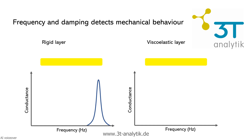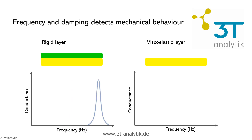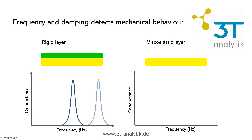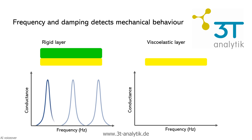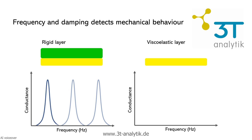Now we add a rigid layer to the sensor. As the layer thickens, the resonance frequency drops — the vibration slows down. Because the rigid layer doesn't absorb much energy, the peak shape stays sharp and the vibration quality remains high.